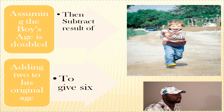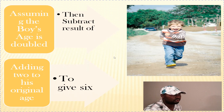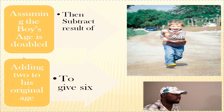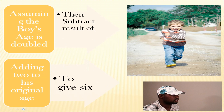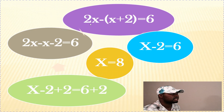Now, look at this problem: assuming the boy's age is doubled, then subtract the result of adding 2 to his original age. The boy's age we don't know is represented by x. Add 2 to it, then subtract whatever result from doubling his age. We were told that gives us 6. The boy's age has 2 added to it, giving (x + 2). Doubling his age means multiplying it by 2, giving 2x. So: 2x minus (x + 2) equals 6.